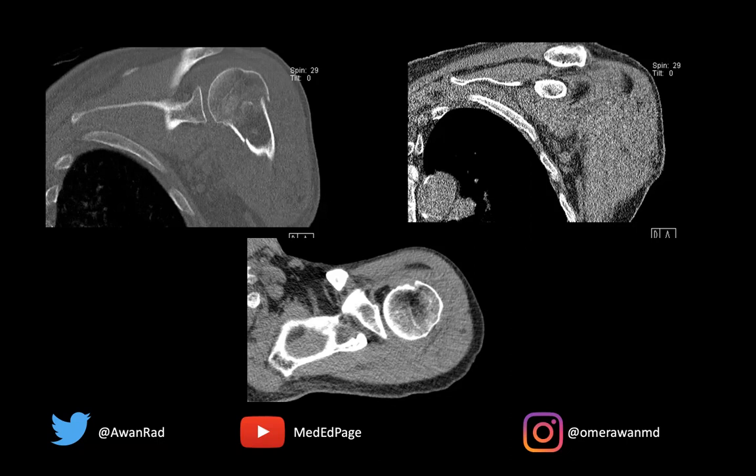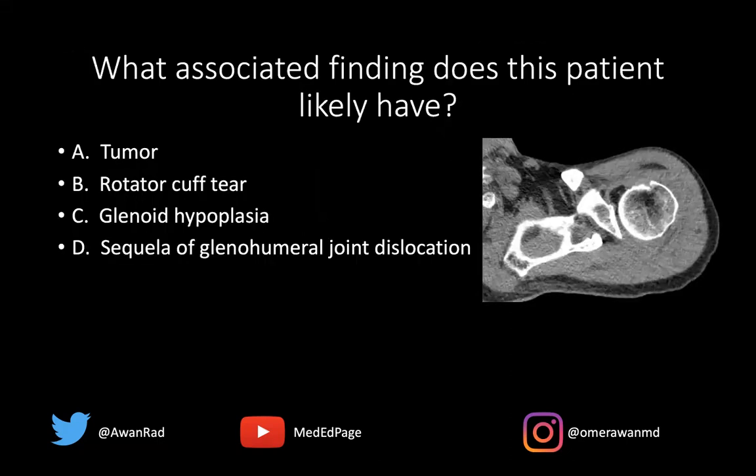We have coronal images and soft tissue window images through the shoulder, and we have an axial image in soft tissue windows through the shoulder. The question I have for you is: what associated finding does this patient likely have? Does this patient have a tumor, a rotator cuff tear, glenoid hypoplasia, or sequela of glenohumeral joint dislocation?